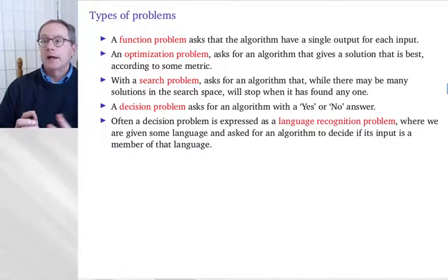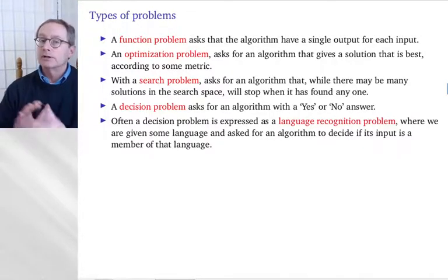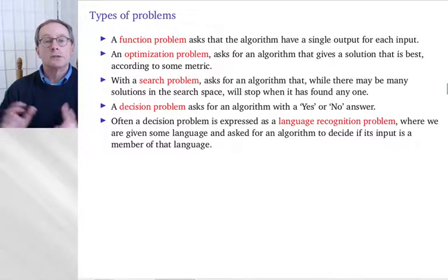So a function problem asks that an algorithm have a single output for each input. If I asked you to, for example, find the prime factorization of a number, you are looking for a single output for each input. I am giving you a number as input, and you are supposed to give as output the prime factorization. An optimization problem asks for an algorithm that gives a solution that is somehow best. Let's say, for example, the traveling salesman problem asks you to find the minimum distance. You can also imagine a traveling salesman problem that asks you for the minimum time, and they are not necessarily the same. If you drive on back roads, you might be going slower. Although it is a shorter distance, it takes you a longer time.